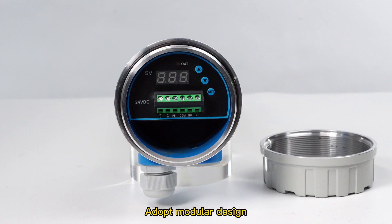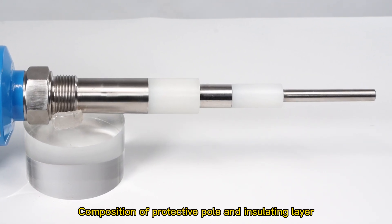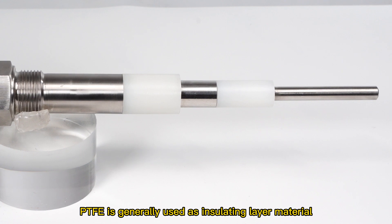With modular design, the probe is mainly composed of measuring electrode, protective pole, and insulating layer. TFE is generally used as insulating layer material.